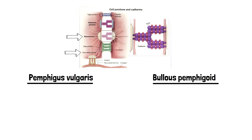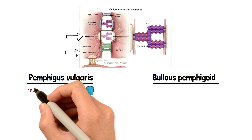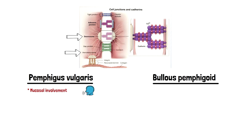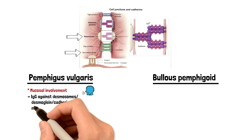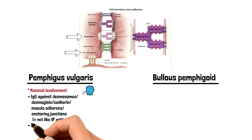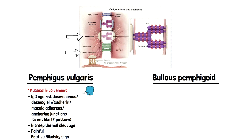So, Pemphigus Vulgaris involves desmosomes. The way I remember this is that it has mucosal involvement because in the name it has 'vulgaris,' and you say vulgar things with your mouth. This is IgG against desmosomes. They can be more specific in the vignette and say desmoglein, which is a component of it, or they can be more general and say anchoring junctions. Any of these words can be used to describe the IgG against what it is.